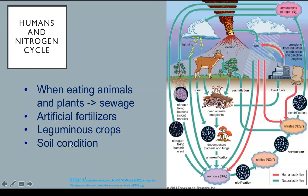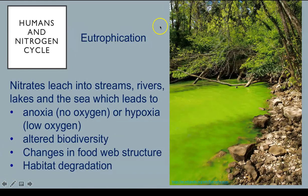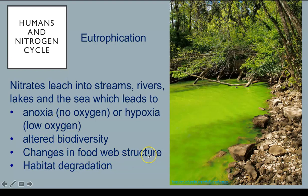Soil condition also affects the nitrogen cycle. If it becomes waterlogged near the surface, most bacteria are unable to break down the dead material. Much of the nitrogen applied to agricultural and urban areas ultimately enters rivers, lakes, the sea, and near-shore coastal systems. In near-shore coastal marine systems, increases in nitrogen can often lead to anoxia — no oxygen — or hypoxia — low oxygen — as well as altered biodiversity, changes in food web structure, and general habitat degradation.